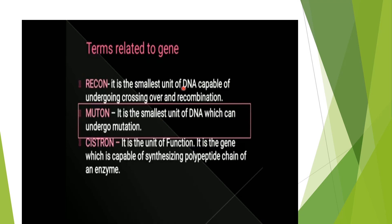The terms related to gene: Recon — it is the smallest unit of DNA that is capable of undergoing crossing over and recombination. Muton — it is the smallest unit of DNA which undergoes mutation. Cistron — it is the unit of function, or it is the gene which is capable of synthesizing a polypeptide chain of an enzyme.